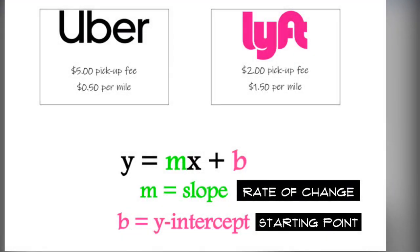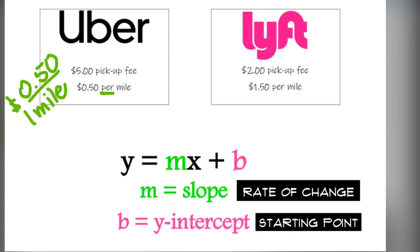We are going to break it down into slope and y-intercept by looking at the rate of change and the starting point. Uber has a rate of $0.50 per mile — that is a comparison of cost to distance. Lyft has a rate of $1.50 per mile, again a comparison of cost to distance.